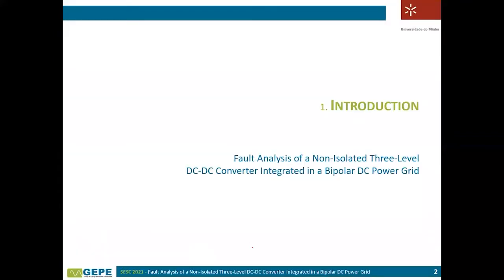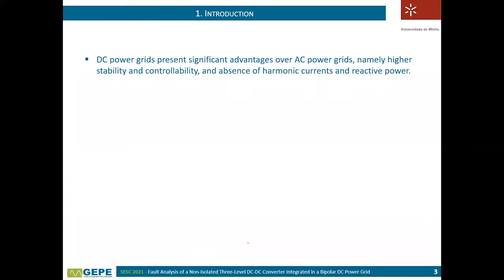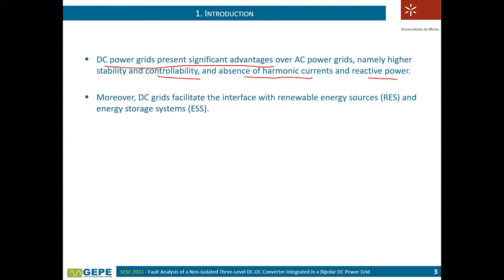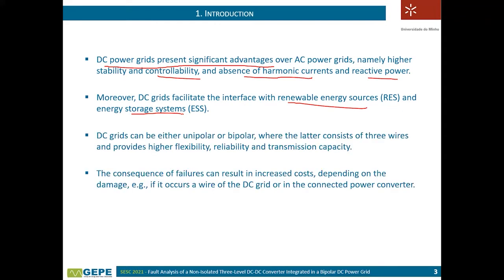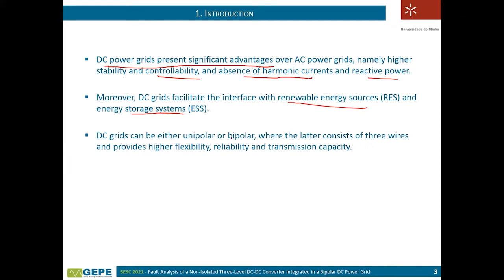In terms of introduction, DC power grids present significant advantages over AC power grids. There are also disadvantages, but from our point of view there are very relevant advantages of DC power grids, and the future can be based on DC grids. Some such advantages are related to controllability, the absence of harmonic currents and reactive power. Additionally, renewables and energy storage systems operate natively in DC, so DC grids will facilitate the interface of renewables as well as storage systems directly in DC.